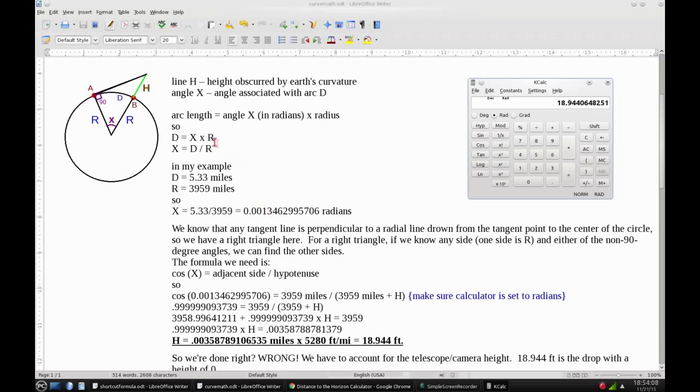But we're not done yet, because remember when I was talking about the shortcut formula, I said you had to account for the telescope height, and this setup right here is for an observer height of zero. So we've got more math to do.